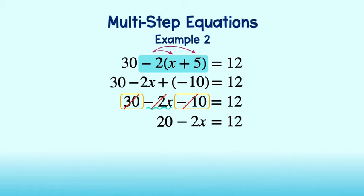Lastly, we will isolate x using the properties of equality. First, I subtract 20 from both sides to get negative 2x equal to negative 8. Then divide both sides by negative 2 to get x is equal to 4.